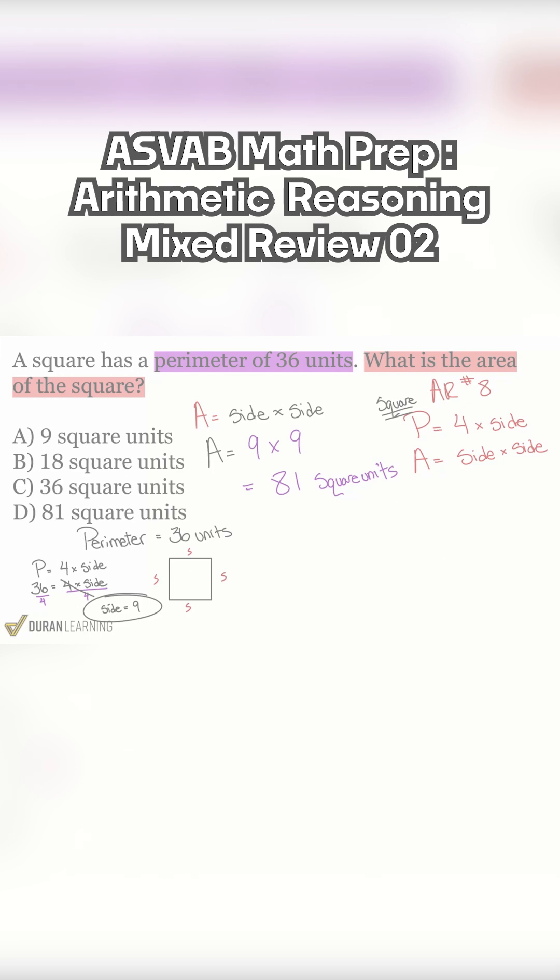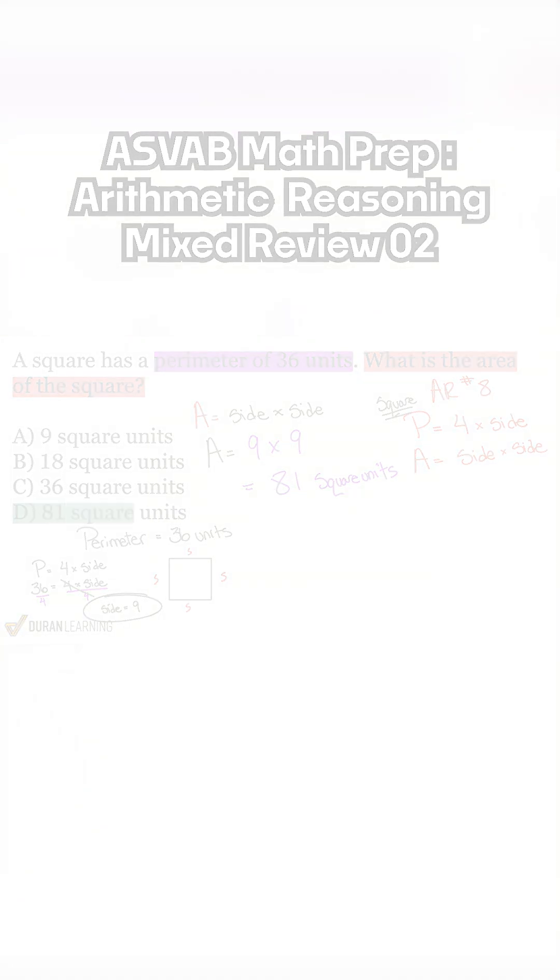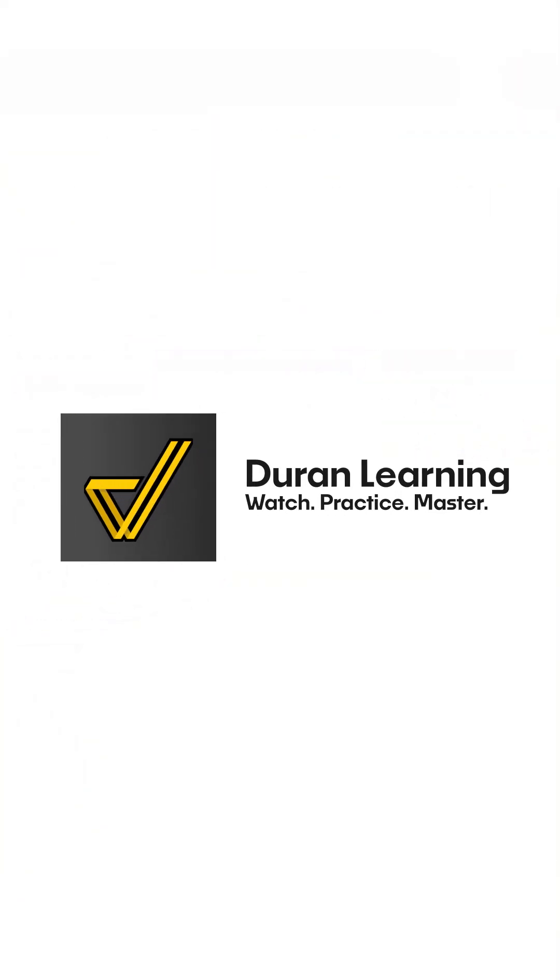And there we go, my party people. That's how we get to the actual correct answer of D, 81, not A, nine.